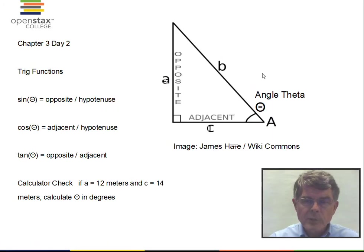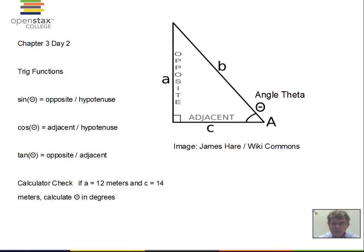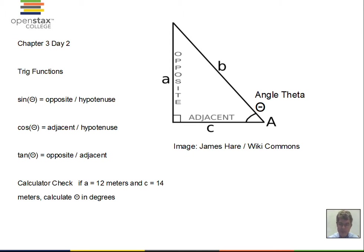Continuing with chapter 3 in the OpenStax College Physics textbook, we're considering the analytic addition of vectors. We've done graphical addition in a previous video; now we want to do the mathematical, more correct form of addition of vectors. For that we'll need a quick review of the trig functions and right triangles.